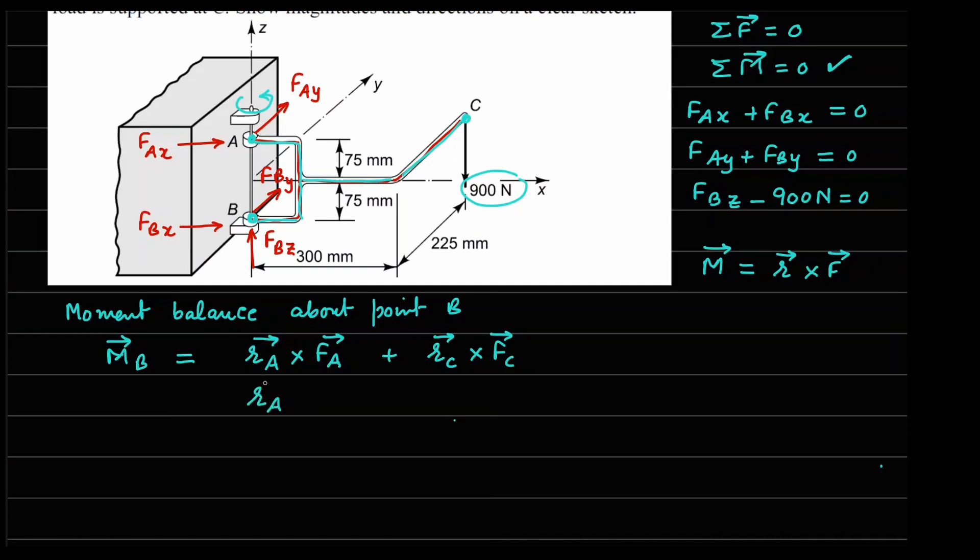So let us start writing these vectors. So if you look at RA, how do I reach point A starting from point B? The only movement I have is along the Z direction and how much we are moving is this 75 mm two times. So RA can be written as 150 Z direction means K cap. And FA value, what is the force at point A? There are two forces which is FAX and FAY. So we can write FAX i cap plus FAY j cap.